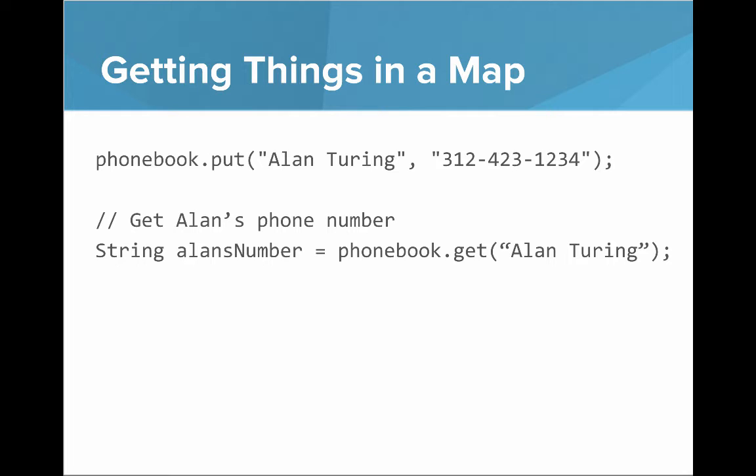So to get things in a map, what we do is we call the get method. So if we want to get Alan's number, we say string Alan's number equals phonebook dot get Alan Turing. And so we pass in the key there.